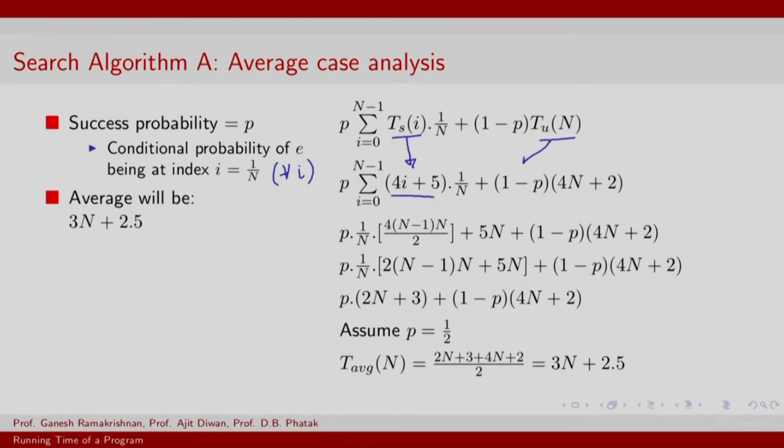So we recall that the time required for successful and unsuccessful search were respectively determined to be 4i plus 5, where i was the location of the successful search, and for unsuccessful search we had found it to be 4 capital N plus 2. So substituting these values we basically get the average time to be 3N plus 2.5. So it takes time that is linear in the size of the input on average.